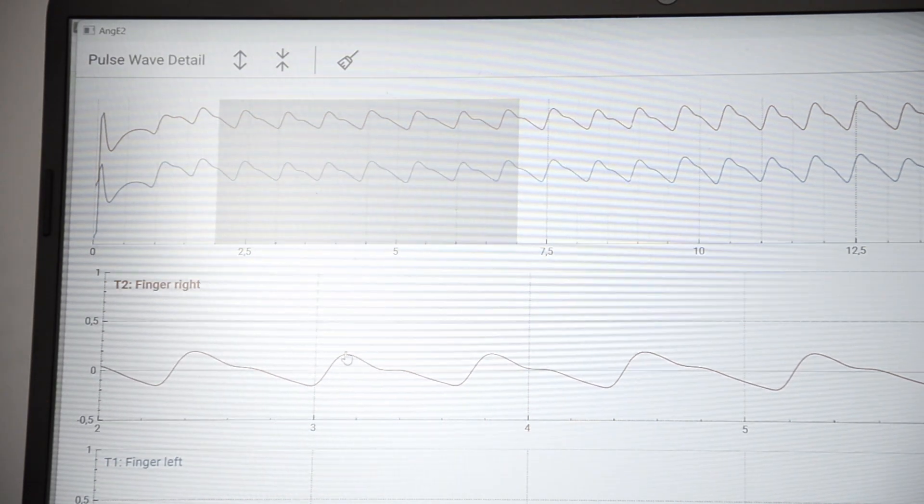In order to calculate the pulse wave velocity, you have to set markers on the peak and the dicrotic wave of the pulse wave.